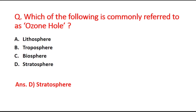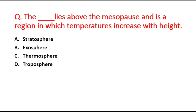Next question: Blank lies above the mesopause and is the region in which temperature increases with height. Option A is stratosphere, B is exosphere, C is thermosphere, and D is troposphere. The mesopause lies above the thermosphere layer of the atmosphere, so option C is the right answer.